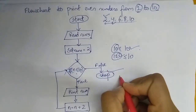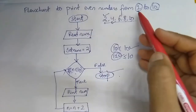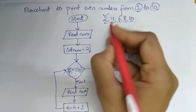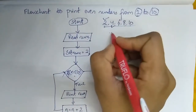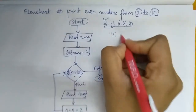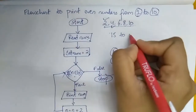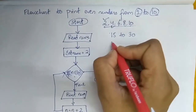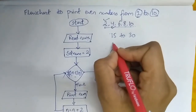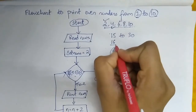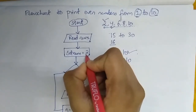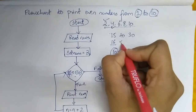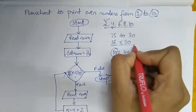To print even numbers between any two values — for example, 15 to 30 — you check what the first even number is, which would be 16. So set num = 16 and use the condition num less than or equal to 30.